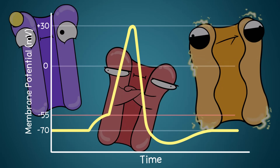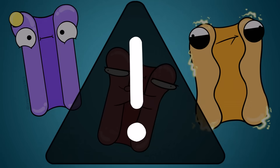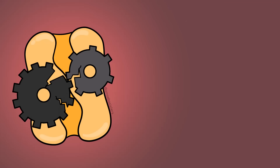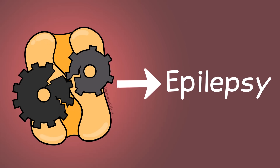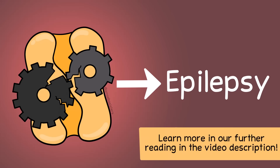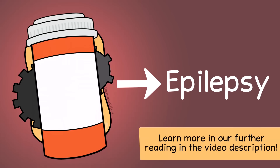To emphasize how important these channels are, there are medical conditions caused when gated ion channels don't function as they should. For example, problems with voltage-gated ion channels can lead to epilepsy, which can cause seizures. This makes voltage-gated ion channels a potential target for medications treating this condition.